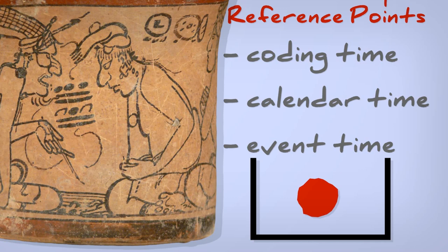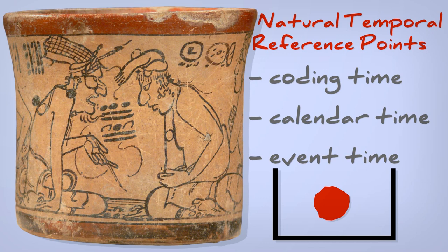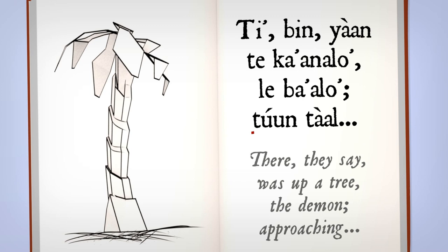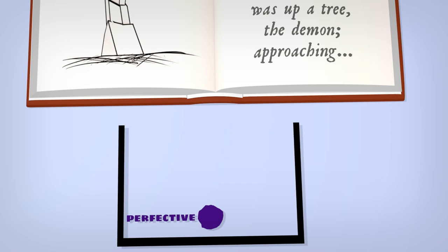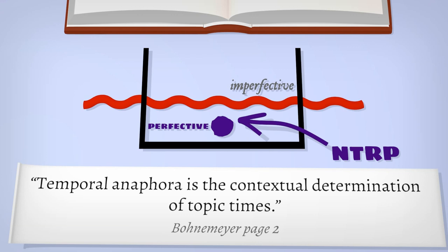What about the other non-perfective aspects? What do they do? Well, turn to page 35, where a story is starting about something scary up a tree. If a Maya storyteller said no more than these lines, it would feel like nothing ever happens in the story. But it would also be hard to interpret. Non-perfective aspects need to bind their topic time to a reference point, like the reference points introduced by perfectives. This is your temporal anaphora, how to determine topic times from context. Use a perfective to set up a topic time around an event, and chain non-perfectives onto that same topic time.